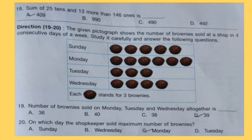Question 18: Sum of 25 tenths and 13 more than 146 ones is dash.